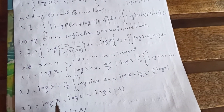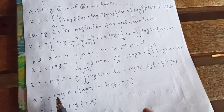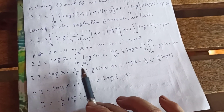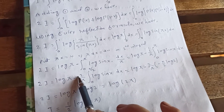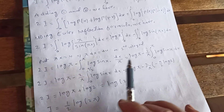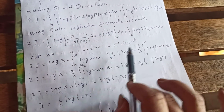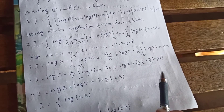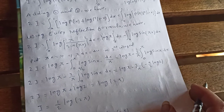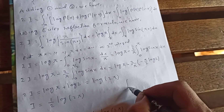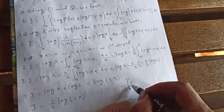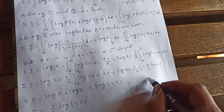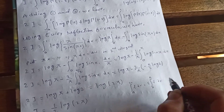Using the property of definite integrals again, 2I equals log(π) minus 2 over π, because of this factor of 2 the upper bound becomes π over 2. The 2s cancel. This uses the property that the integral from 0 to 2a of f dx equals 2 times the integral from 0 to a of f dx.